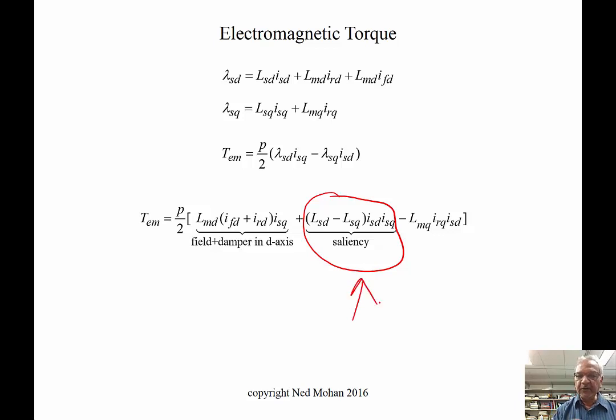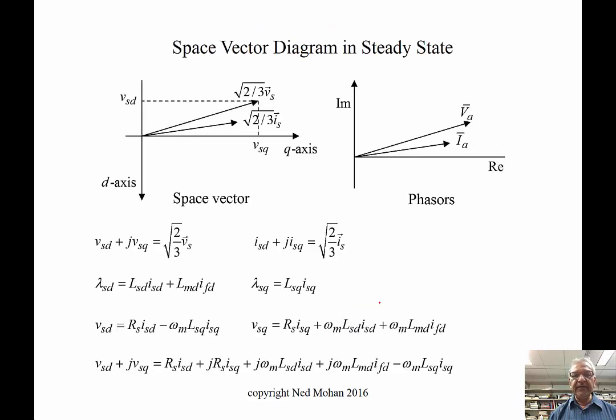If it was a round rotor machine, then LSD would be equal to LSQ, and this term would be zero. Again, similar to what we've done before, we can draw a space vector and the corresponding phasor diagram.